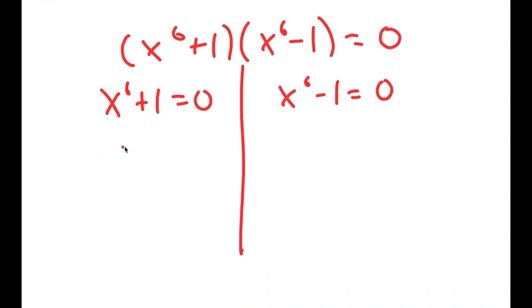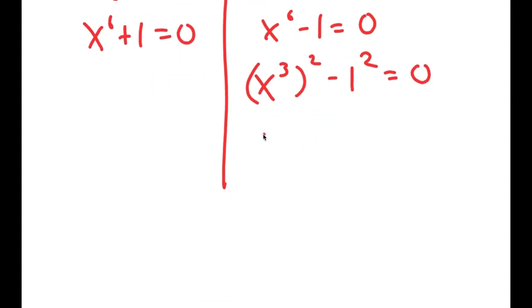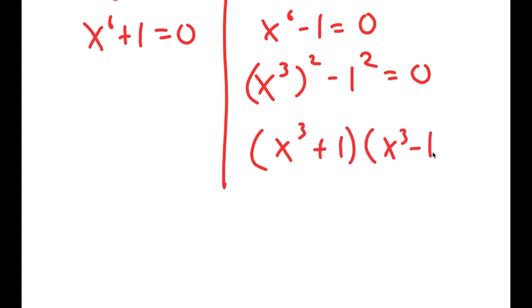I'm going to do the same thing again. I'll rewrite x to the power of 6 minus 1 equals 0 as x to the power of 3 to the power of 2 minus 1 squared equals 0. Using this property again, I get x to the power of 3 plus 1 times x to the power of 3 minus 1 is equal to 0.